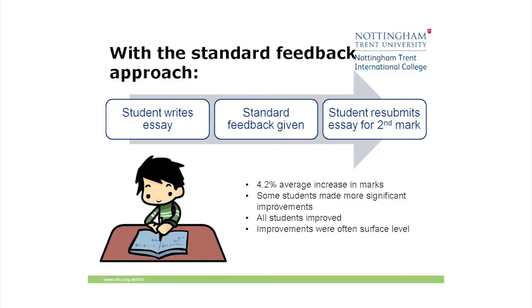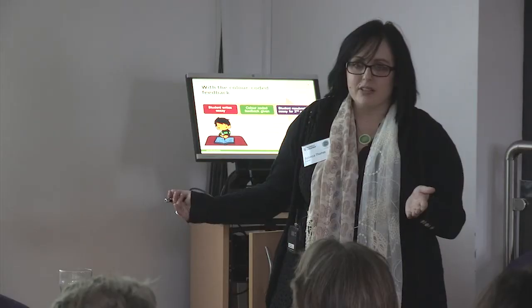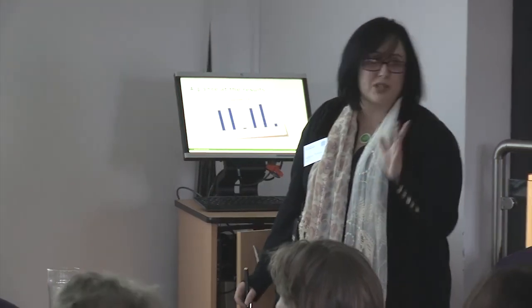There's about a week in between, but they could have improved. With the standard feedback approach, there was an average 4.2 increase in marks. Some students made more significant improvements — they were the higher level students who engaged more with the qualitative feedback. All students did improve, but mostly at a surface level: fixing full stops, adding capital letters and so on. With the colour coded feedback though, we had a 9.5 average increase in marks — more than double the standard. All but one student made a bigger difference. Improvements showed consideration of qualitative comments, and that's the most important thing for me.